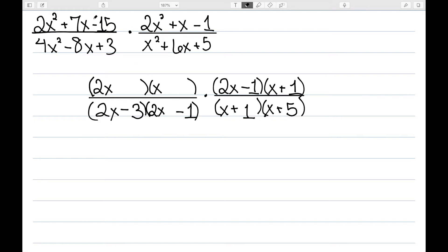The 15 one might be a little bit harder. We do know that 15 is 3 times 5, so we can try putting a 3 here and a 5 here and seeing if it works out. 2 times 5 is 10, and 3 times 1 is 3, and if we do positive 10 and negative 3, that would add to give me positive 7.